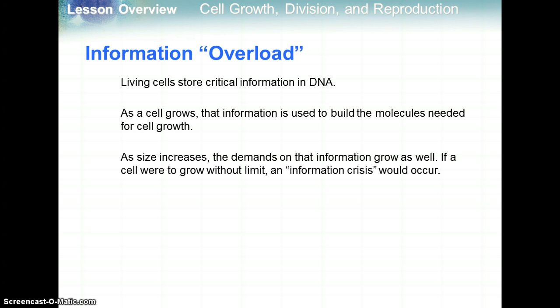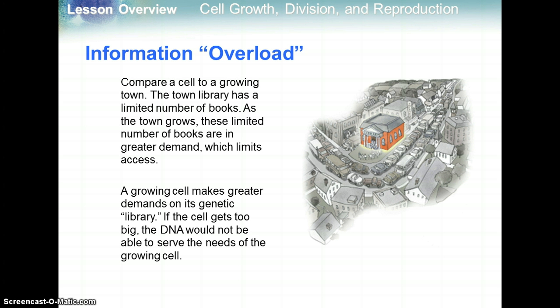Information overload: living cells store critical information in DNA — deoxyribonucleic acid — which we'll talk about more later in this unit. As a cell grows, that information is used to build the molecules needed to force cell growth. DNA carries your genetic information to make everything that's in you. As size increases, the demands on that information grow as well. If a cell were to grow without limit, an information crisis would occur. If a growing cell was like a growing town, the town library has a limited number of books; as the town grows, those books are in greater demand, limiting access to information. Similarly, a growing cell makes greater demand on its genetic library. If the cell gets too big, the DNA would not be able to serve the needs of the growing cell — there wouldn't be enough genetic information to go around.